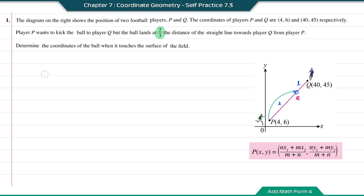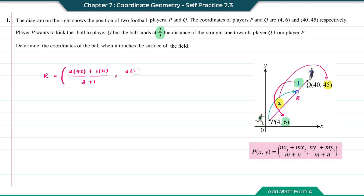To find the coordinates of point R, it will be: (2 times 40 plus 1 times 4) divided by the total ratio which is 2 plus 1, and (2 times 45 plus 1 times 6) divided by 2 plus 1. So this will equal 84 over 3 and 96 over 3.